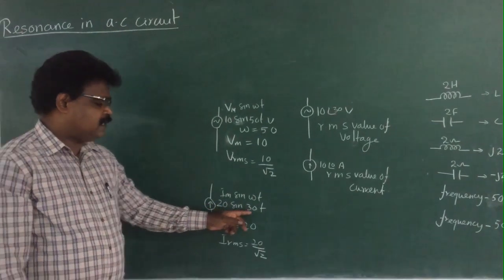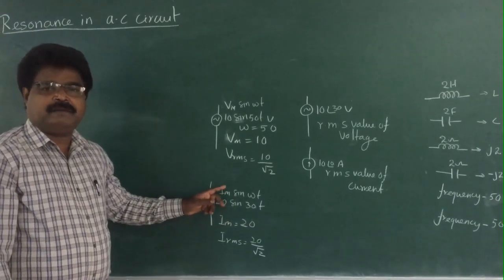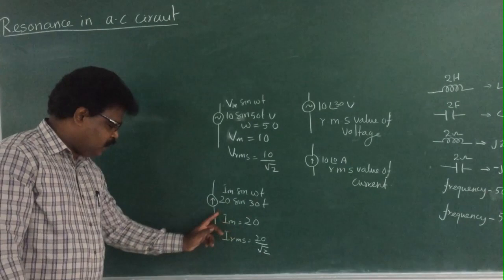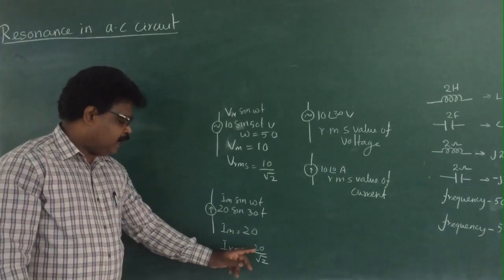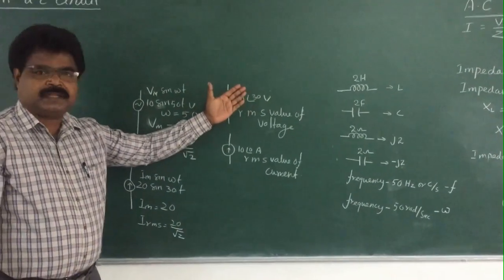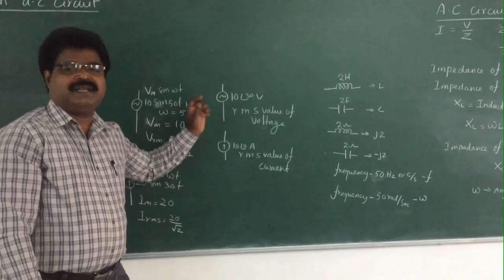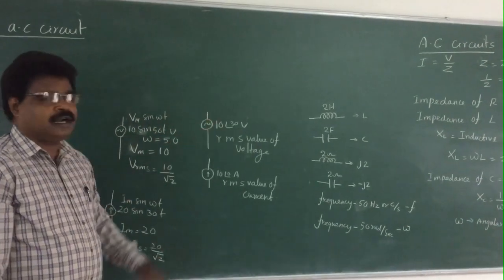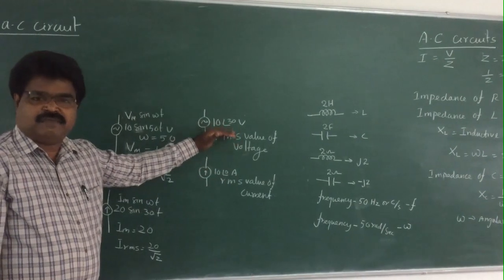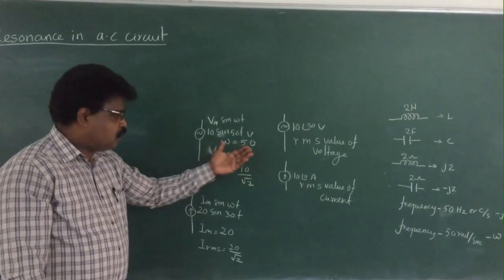For example, 20·sin(30t) for current follows the form Im·sin(ωt), so 20 is Im (maximum). Convert to RMS by dividing by √2: Irms = 20/√2. However, if voltage is given in phasor form like 10∠30° V, it is already the RMS value — no conversion needed. You must be careful to distinguish maximum values from RMS values when solving resonance problems.